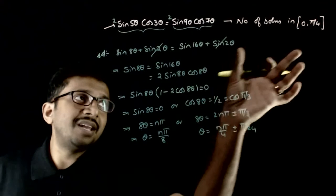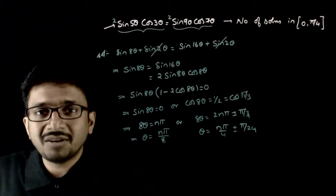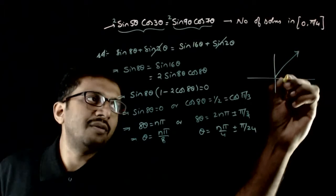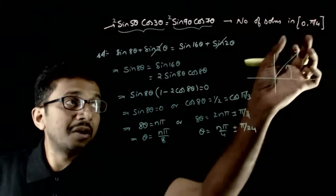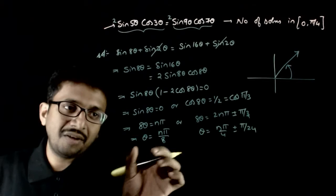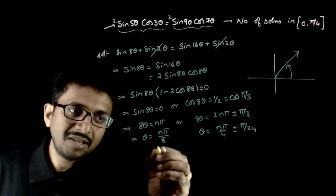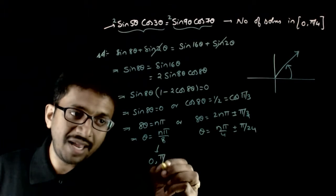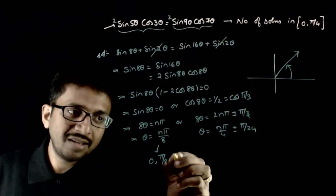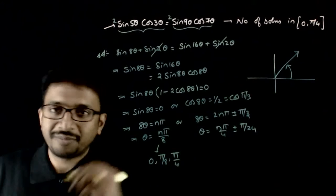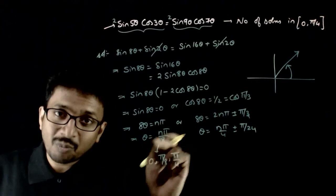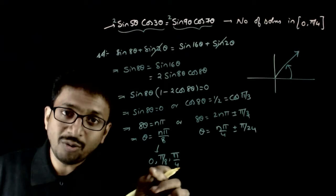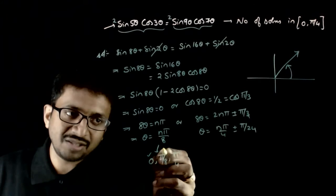We need to find the number of solutions in the interval [0, π/4], which is 0 to 45 degrees. For θ = nπ/8: putting n=0 gives 0, n=1 gives π/8, n=2 gives π/4, and n=3 gives more than π/4 which is not valid. So there are three solutions of this type.